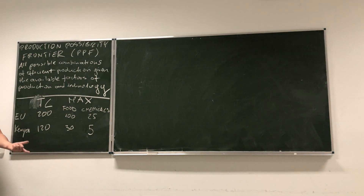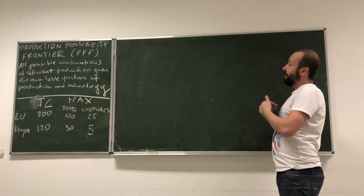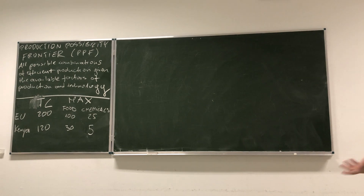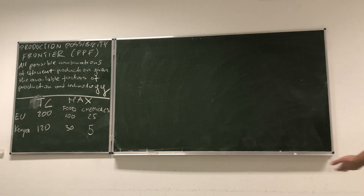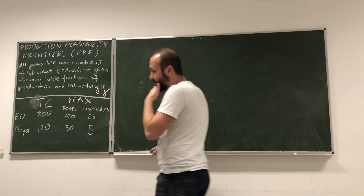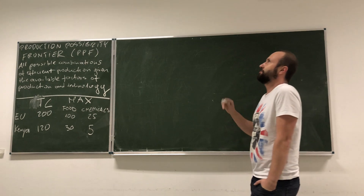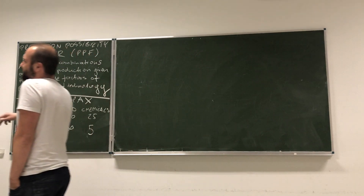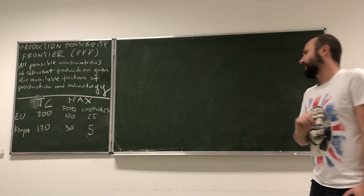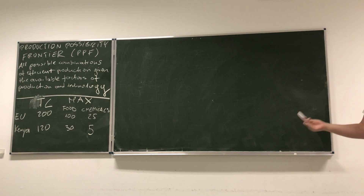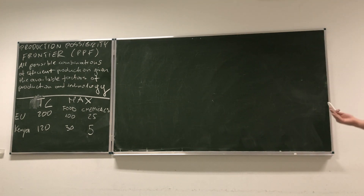How do we use those numbers? Well, it is really easy, but we are going to do this very slowly and write it down algebraically. Understanding this now will make everything later very accessible. Let's get back to one of our assumptions: constant returns to scale. We have just one factor of production — labour. This implies that our production possibility frontier, in this particular case, is just a straight line.